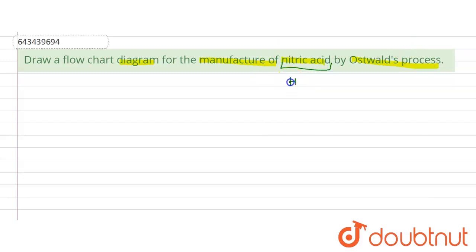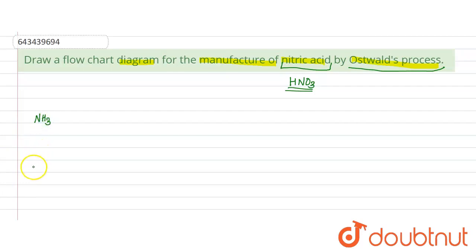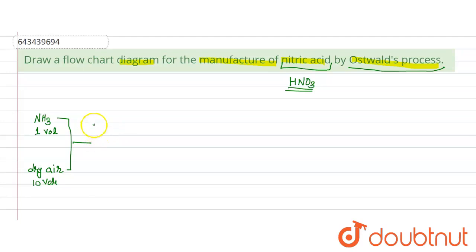Nitric acid is HNO3, and it is formed by the Ostwald process. In the Ostwald process, it is manufactured from ammonia gas and dry air. One volume of ammonia and ten volumes of dry air are taken in the catalytic chamber.